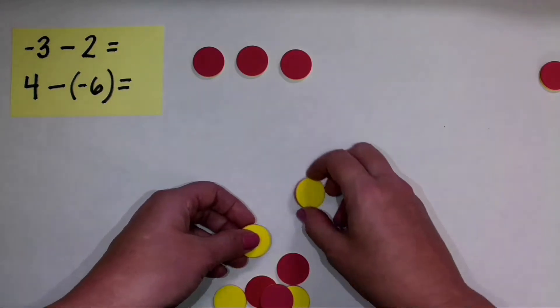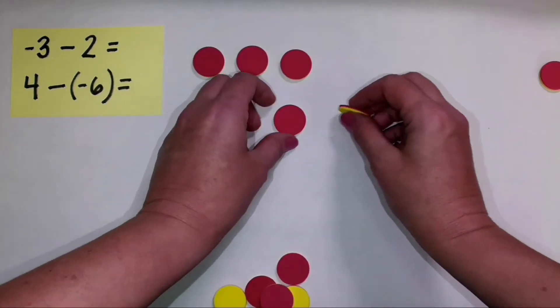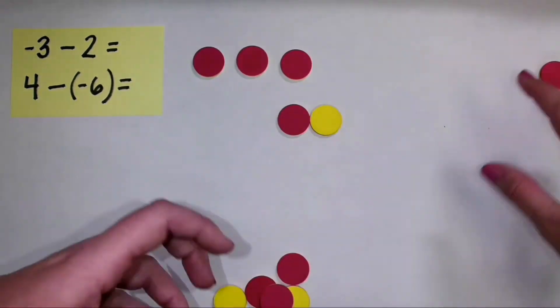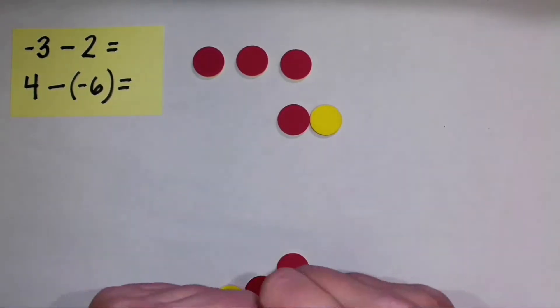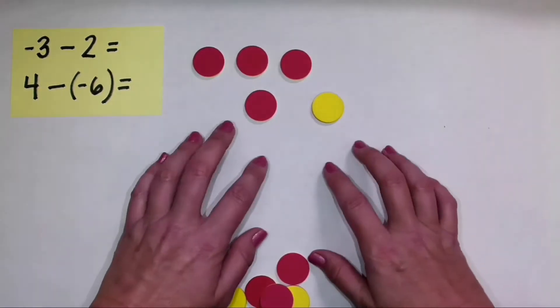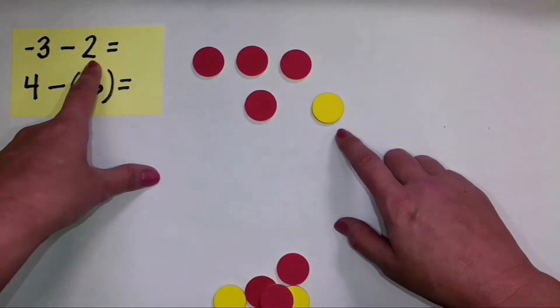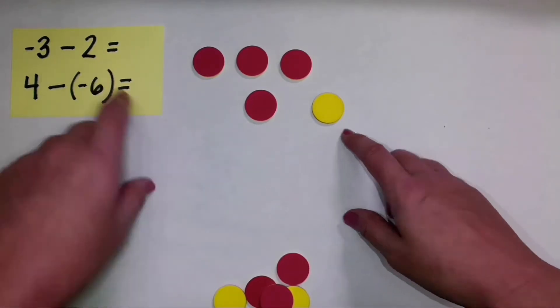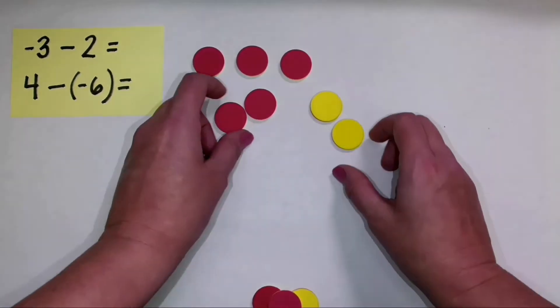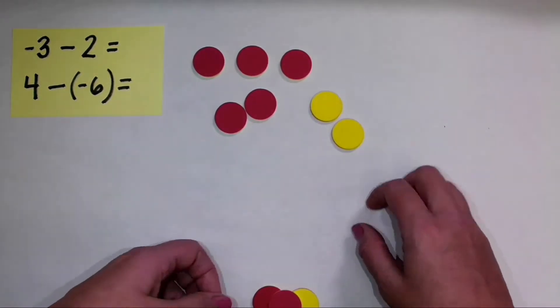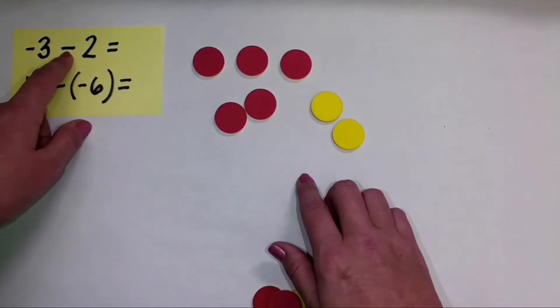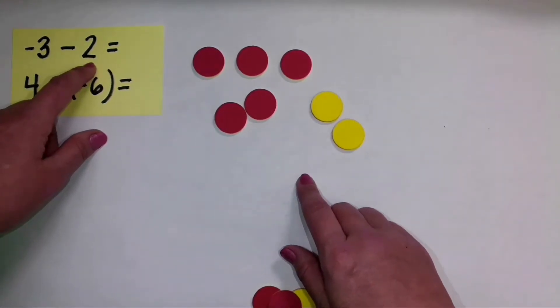So we use the concept of zero pairs. If I bring in a negative and a positive, it doesn't change the value of all of the numbers that I'm working with right here. So now I have one positive, but I still don't have two. So I'm going to bring in another zero pair, and I'll arrange those just like that. And now I see I do have two positives that I can subtract. That's what the minus sign is telling me to do.